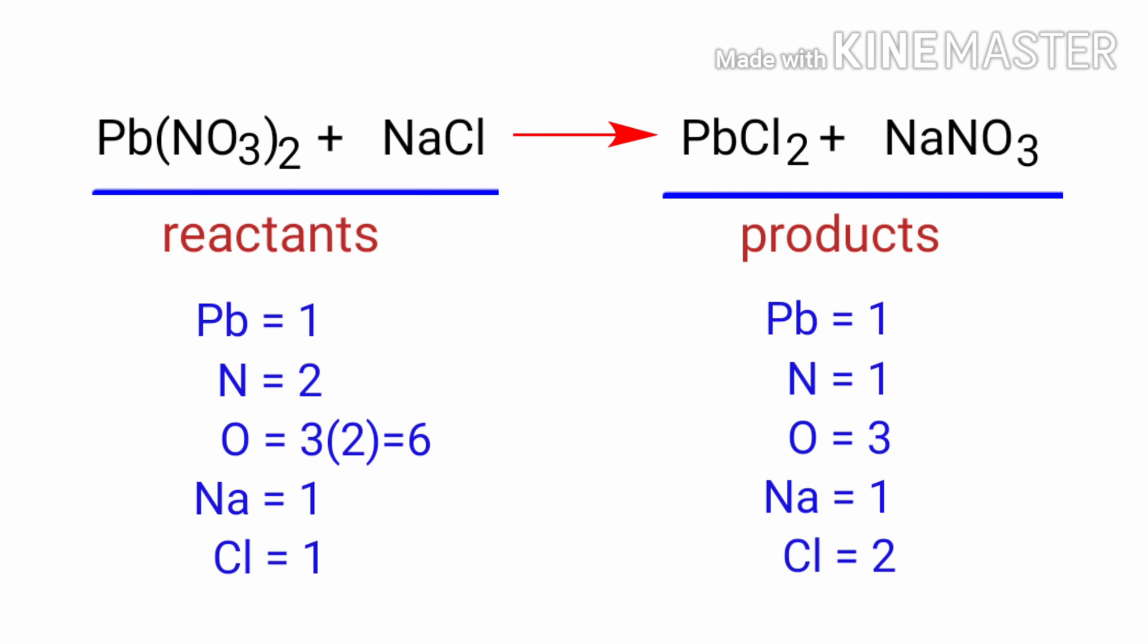If you look at this equation, the equation is not balanced. In the reactants side there are 1 lead atom, 2 nitrogen atoms, 6 oxygen atoms, 1 sodium atom, and 1 chlorine atom present. On the products side there are 1 lead atom, 1 nitrogen atom, 3 oxygen atoms, 1 sodium atom, and 2 chlorine atoms present.